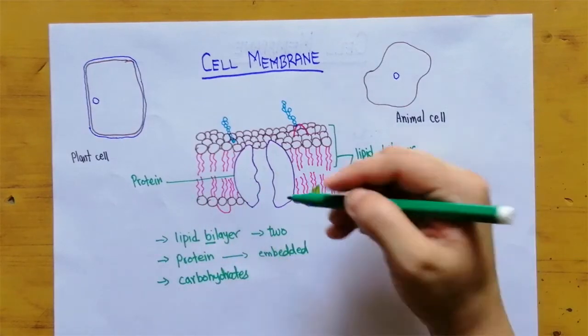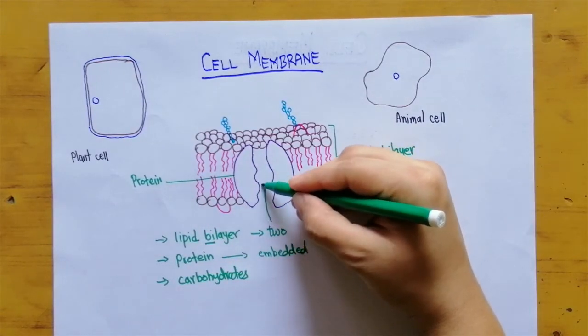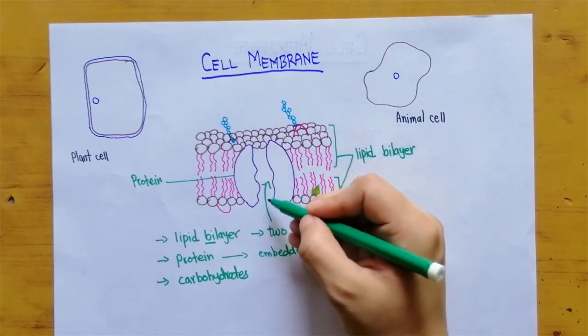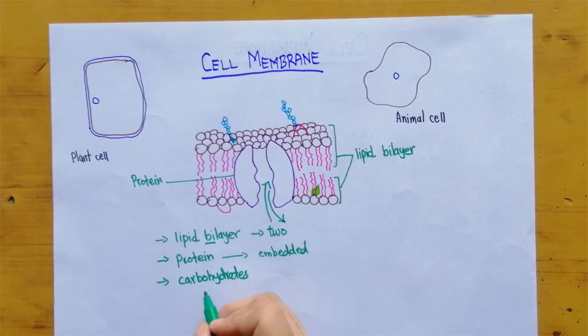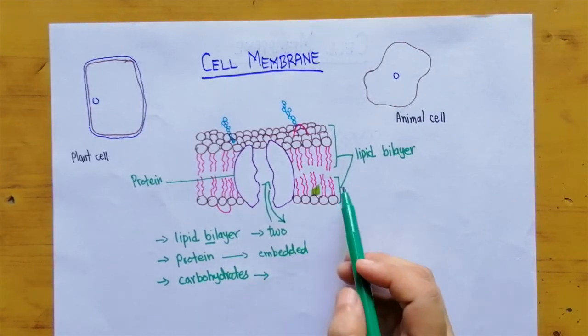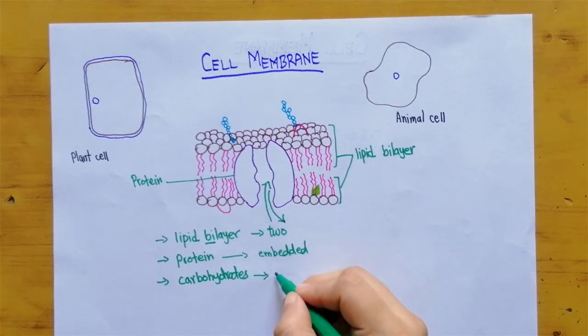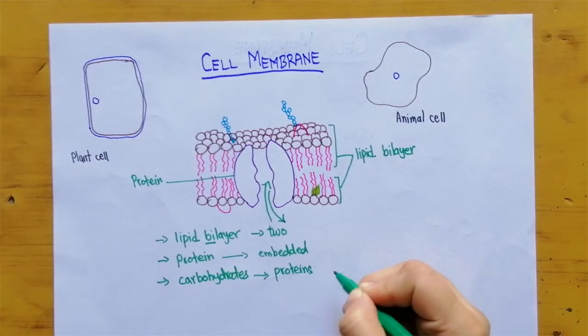The function of protein is that it allows some molecules to go inside and it also allows some molecules to exit the cell. There are small amount of carbohydrates present in the cell membrane which may be attached to proteins or they may be attached to lipid.